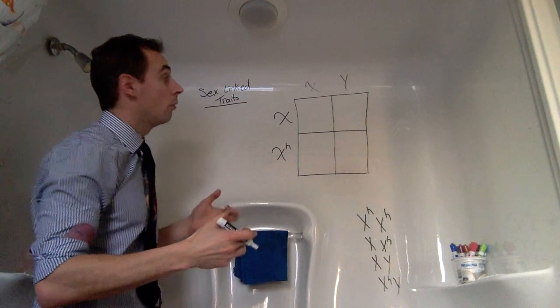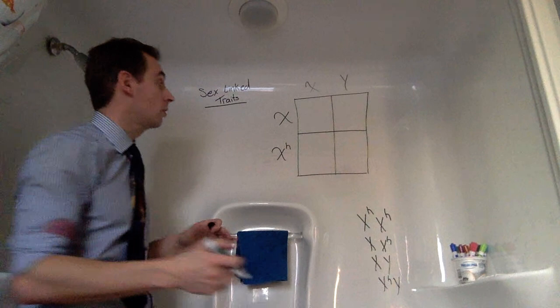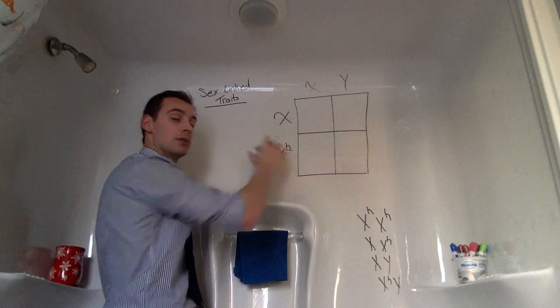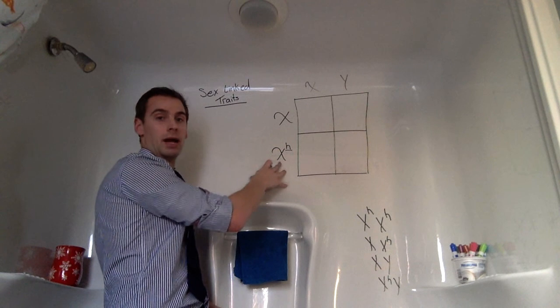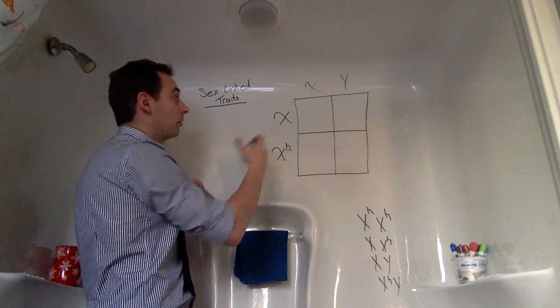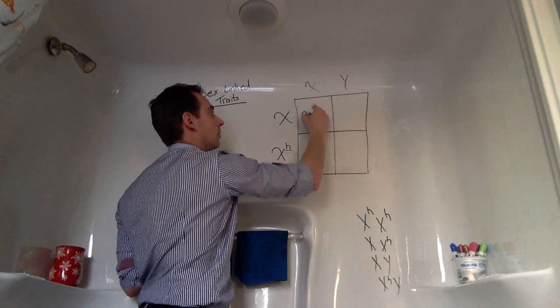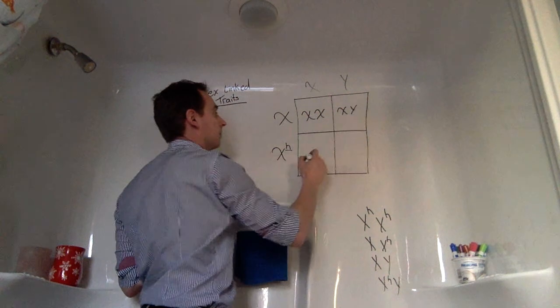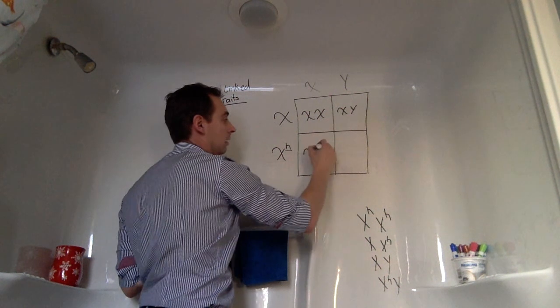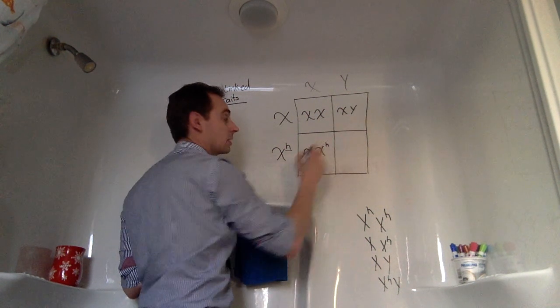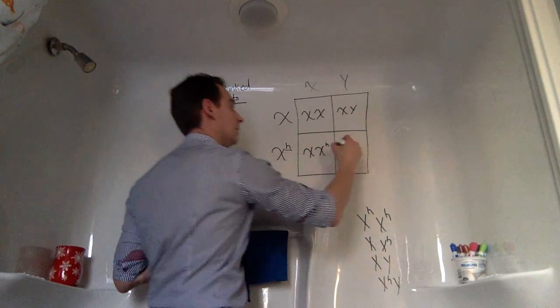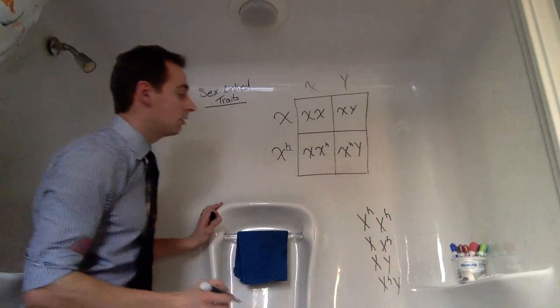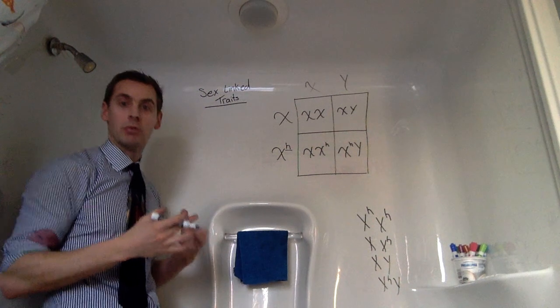So all we do is we're going to act just like a regular Punnett square, but because we have this little superscript here, that's going to represent that recessive trait on our X chromosome. So I'm going to plug it in as normal. So here we would get XX, so XY. And here we're going to get X with our superscript, and here we're going to get... So here are the four possible combinations.